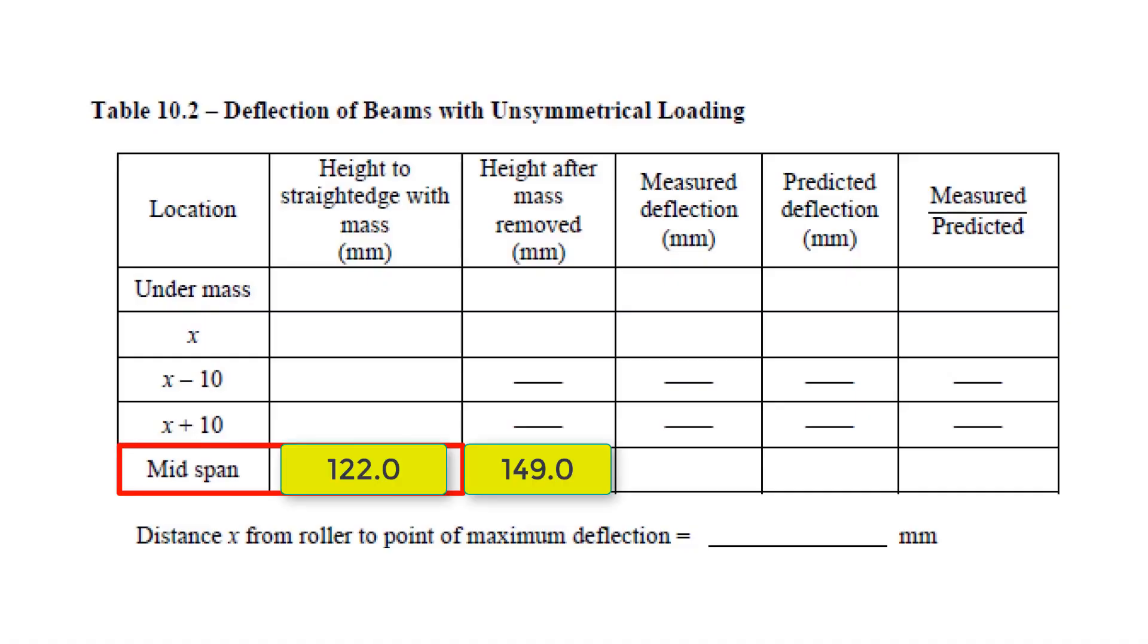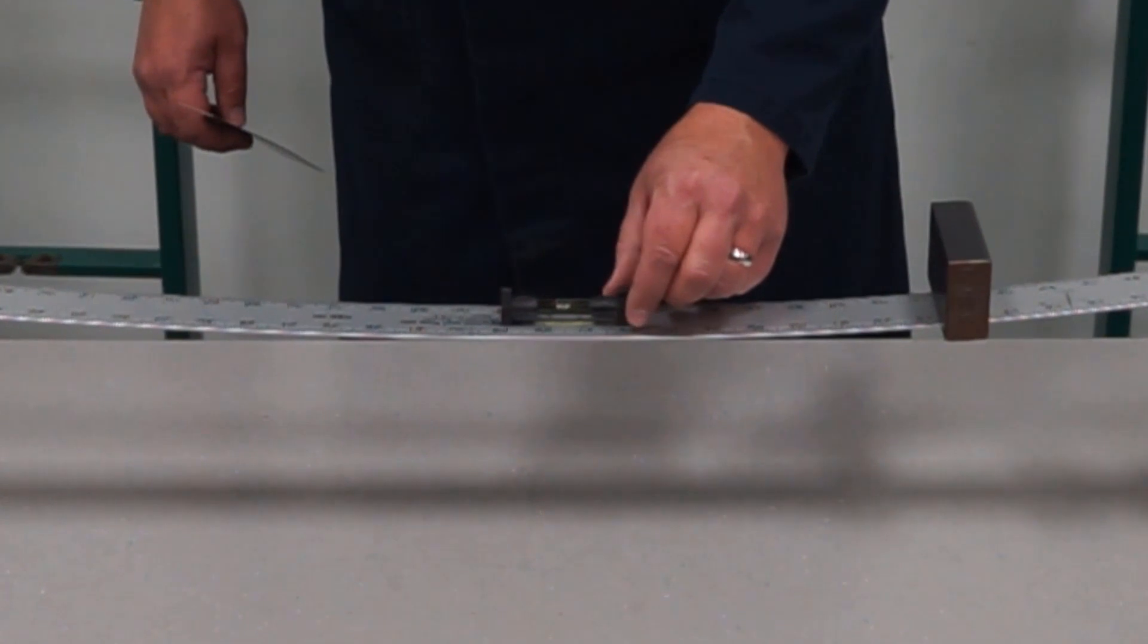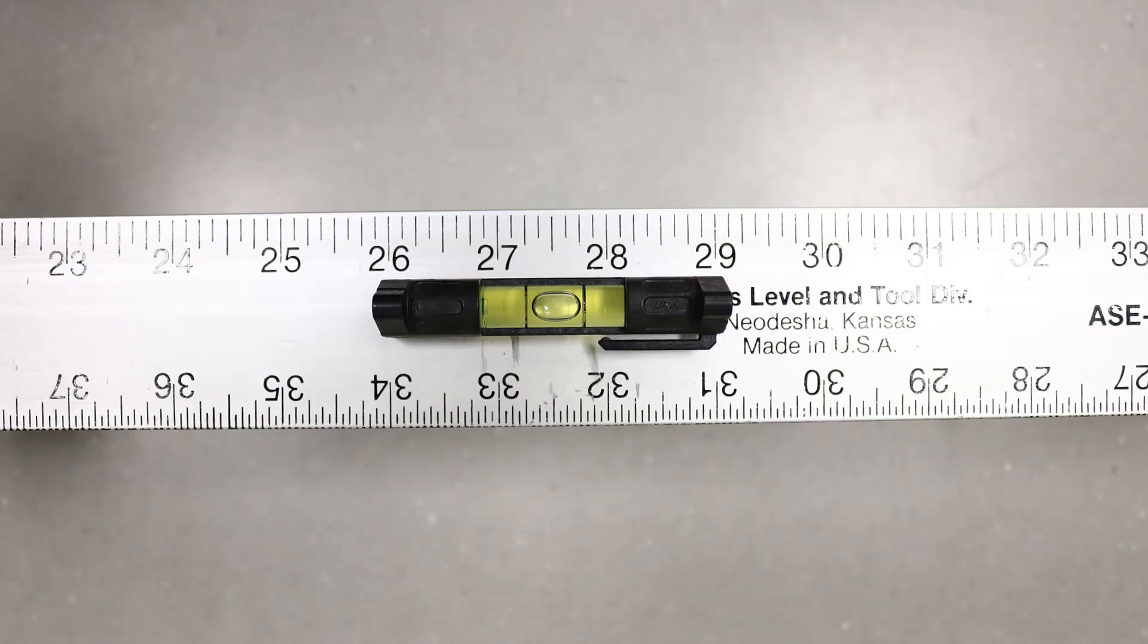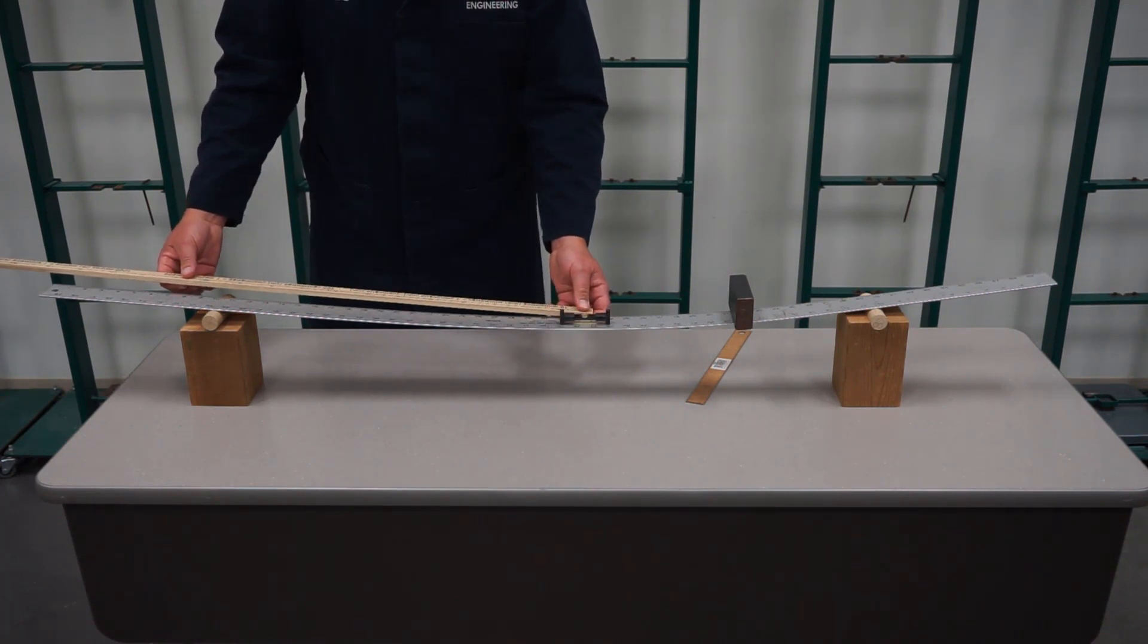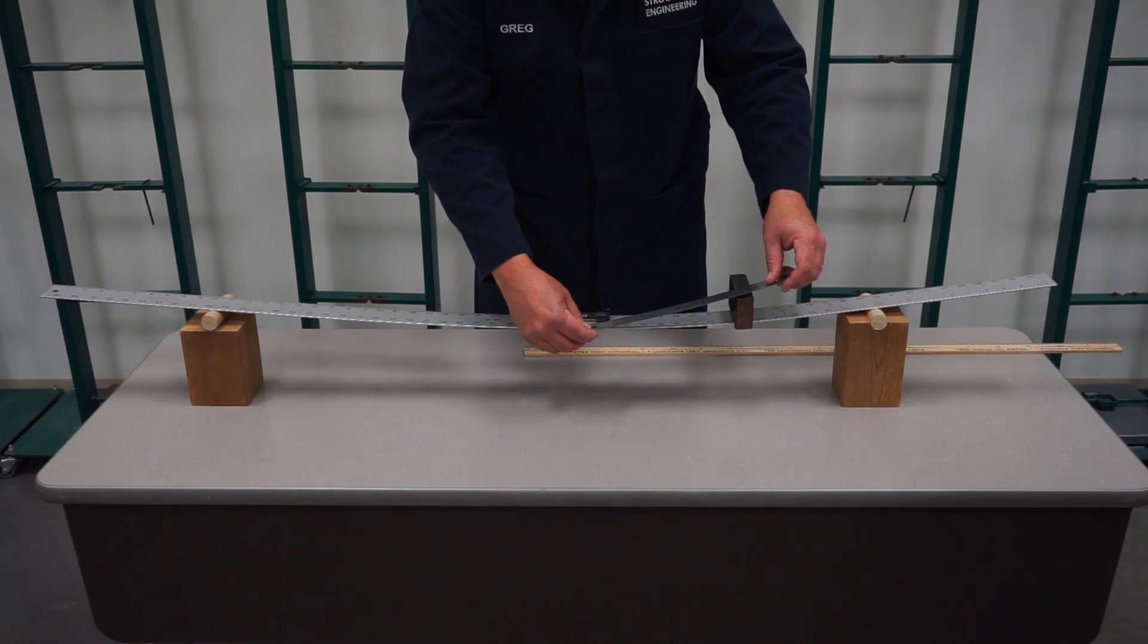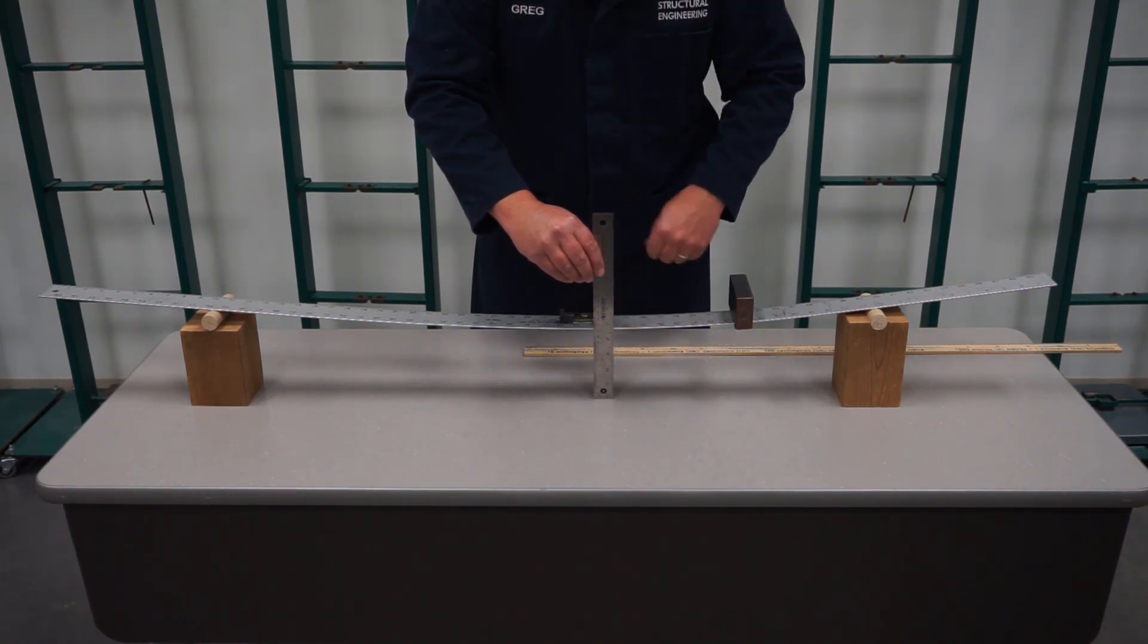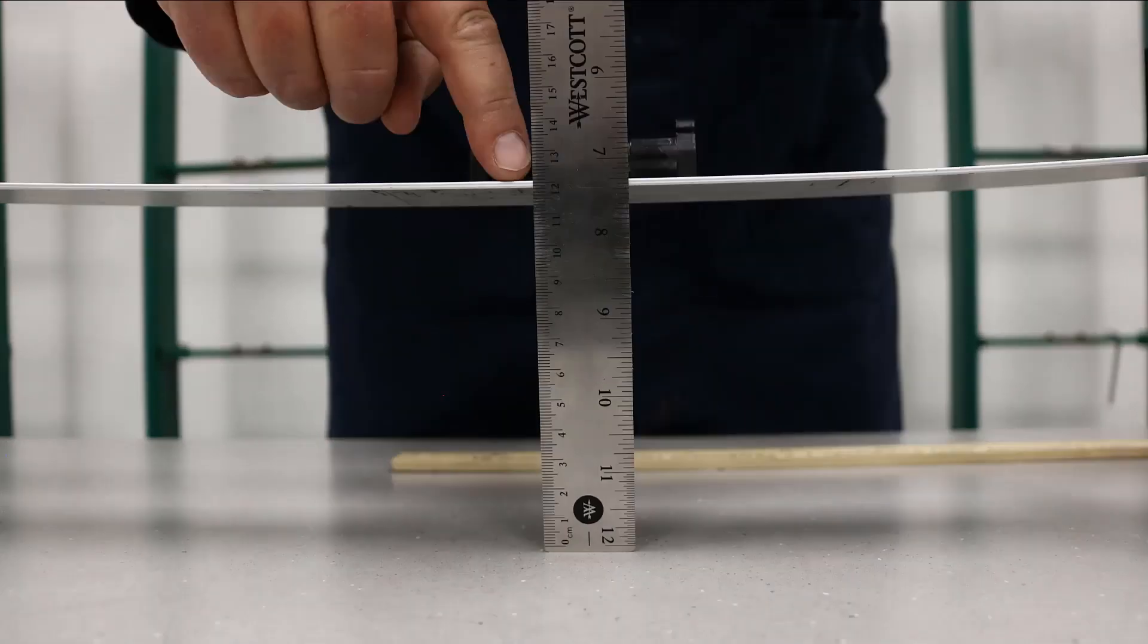Using the spirit level, determine the location where the slope of the beam is approximately zero, in other words, point of maximum deflection. Determine the distance from this location to the roller. Record this measurement and measure the distance to the table surface at this location. Also measure this after the mass is removed. Finally, measure and record the height of the beam above the table at locations 10 millimeters on each side of the location determined in the last step. See Figure 10.2. To determine whether the location found previously is the point of maximum deflection.